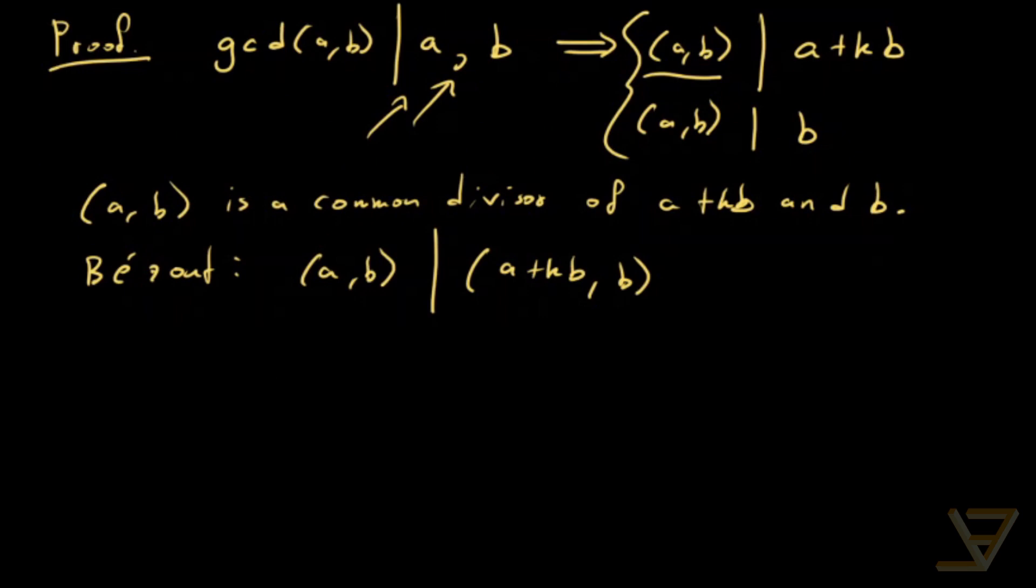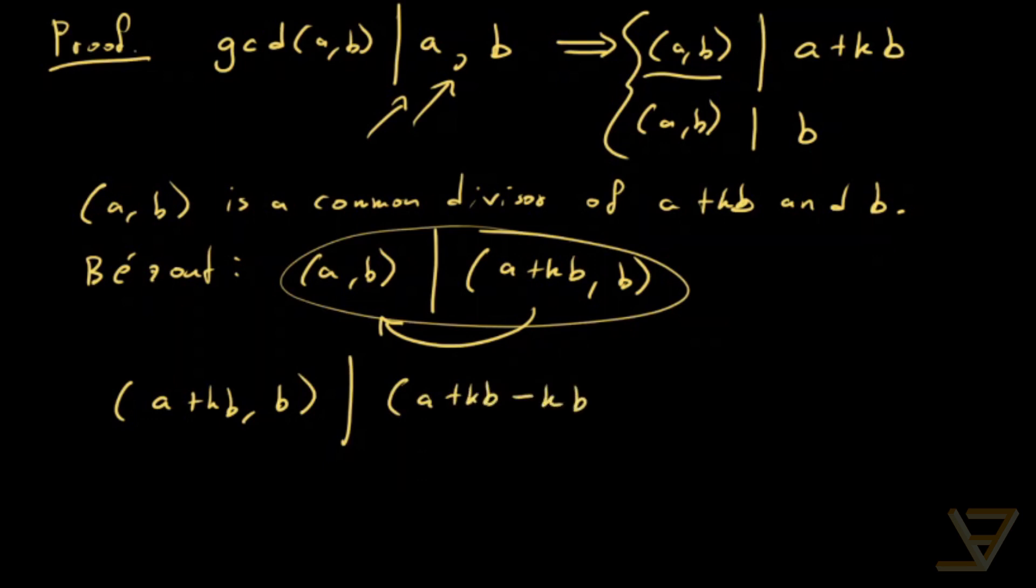Now we can apply this in a sort of reverse fashion. We can go in this direction as well using this idea. What we can say is that gcd of a plus kb and b divides gcd of a plus kb minus kb, because minus k is also an integer, and b, and that's just a gcd of a and b. So we have this and we have this. So by anti-symmetry, which says that if c divides d and d divides c and they're both positive, then c equals d. So that means the gcd of a and b is equal to the gcd of a plus kb and b.